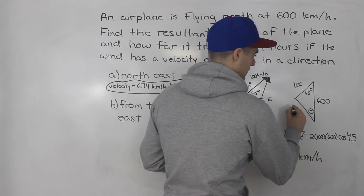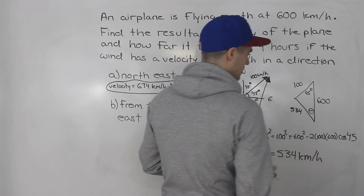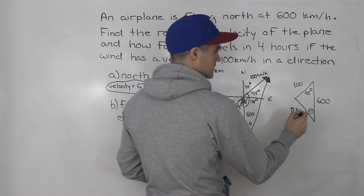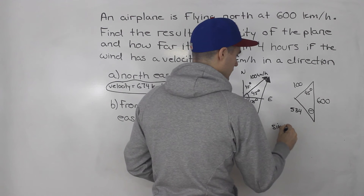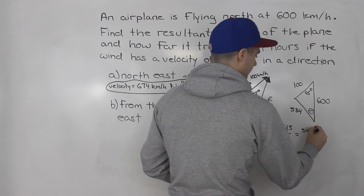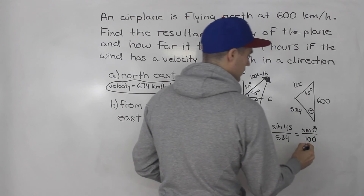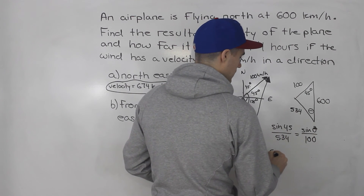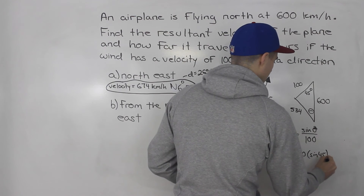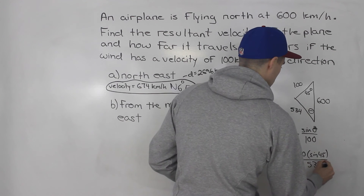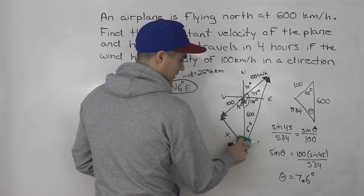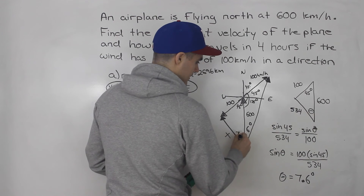Now we just have to solve for theta using sine law: sine of 45 over 534 equals sine of theta over 100. Cross-multiplying and isolating sine theta gives 100 times sine 45 all over 534. When you do that calculation, theta is 7.6 degrees. So this angle here is 7.6 degrees.